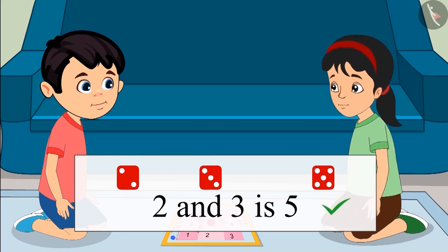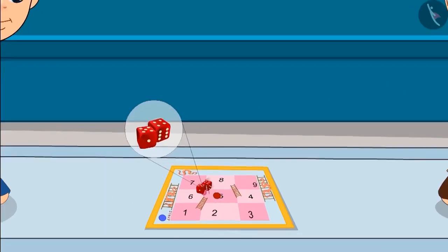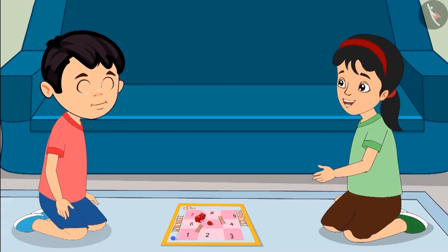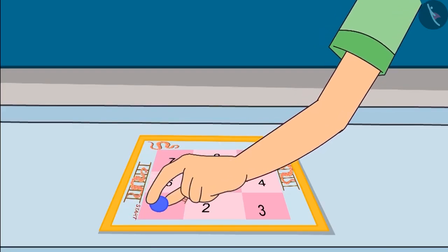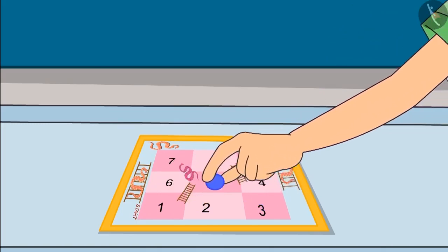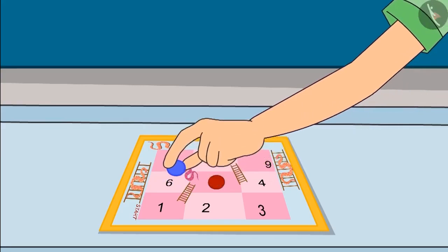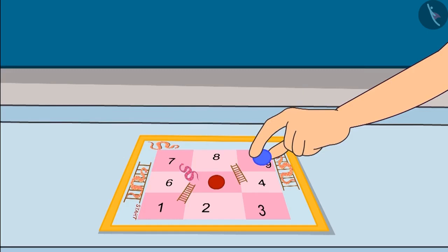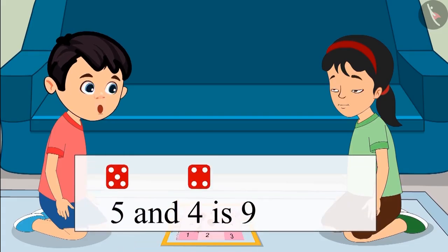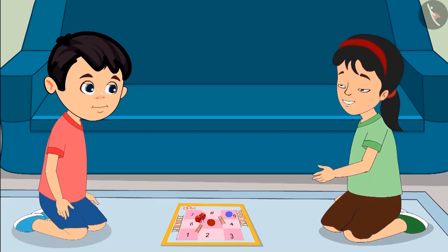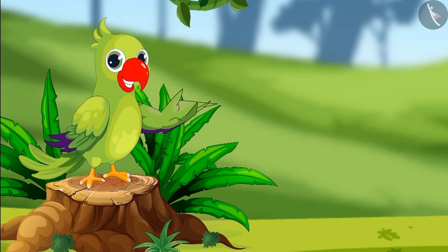Absolutely correct! It's my turn now. Pinky rolls both dice — five comes on the first dice and four on the second. First I'm moving my piece five places forward: one, two, three, four, five. My piece is on number five, so now I will move it four places forward: one, two, three, four. Now my piece has come to number nine. That means adding five and four gave us nine. Yes, Chotu — Pinky is absolutely correct. She won the game!